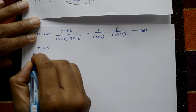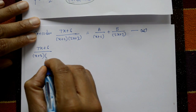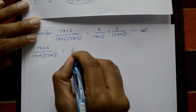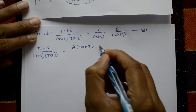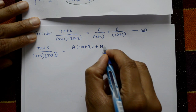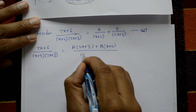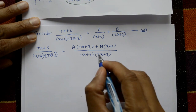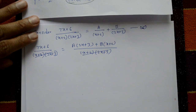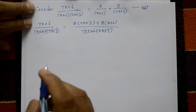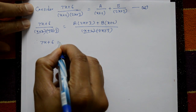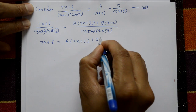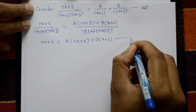By cross multiplication: (7x+6) / [(x+2)(2x+3)] = [A(2x+3) + B(x+2)] / [(x+2)(2x+3)]. Both side denominators cancel, so therefore 7x+6 = A(2x+3) + B(x+2). This is equation number 2.